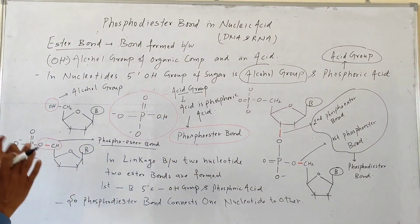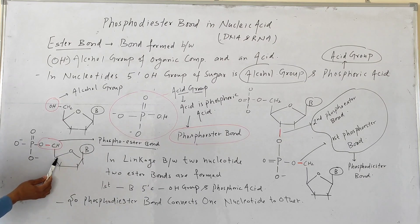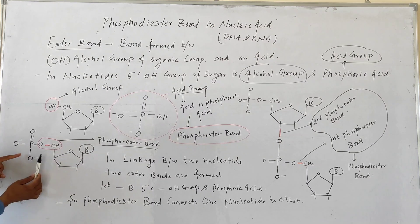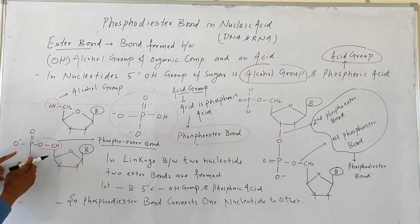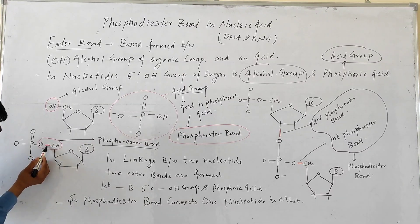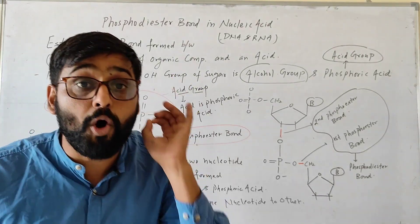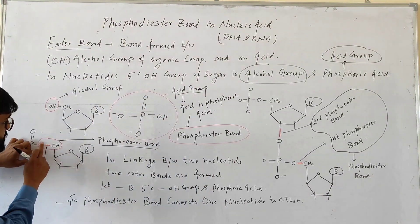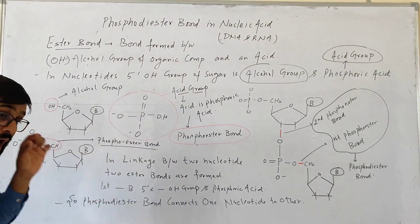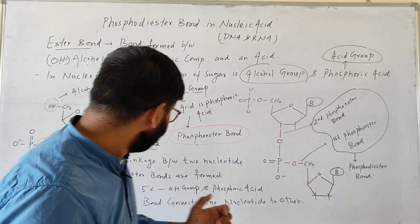So a phospho ester bond is the bond that is present between the sugar and phosphoric acid of a nucleotide. This bond here is a phospho ester bond, and this bond is also a phospho ester bond.